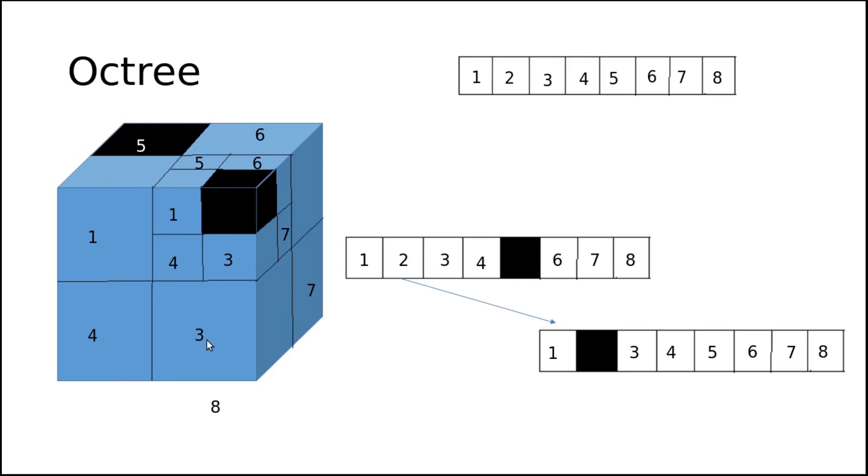This is 1, 2, 3, 4, 5, 6, 7, 8. Here the 5th part is displayed. First, 5th is black. Now in this particular volume, the 2nd is displayed. So it is the octree representation.